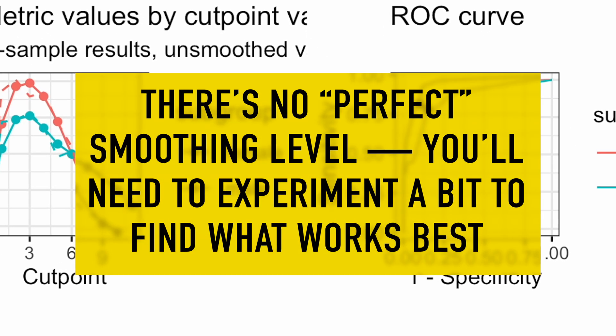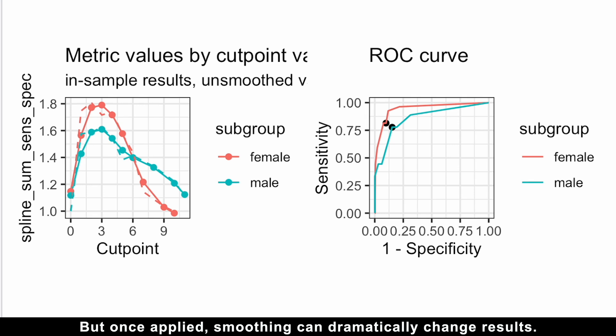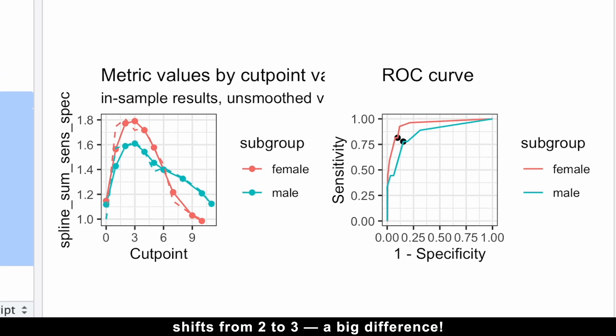However, there is no perfect smoothing level. You'll need to experiment a bit to find what works best. But once applied, smoothing can dramatically change results. For example, after smoothing, the cutpoint for females shifts from 2 to 3. A big difference.